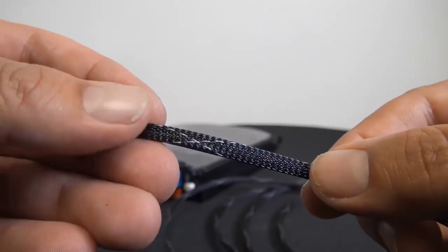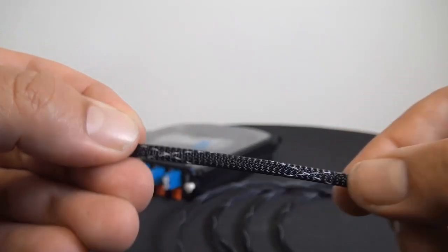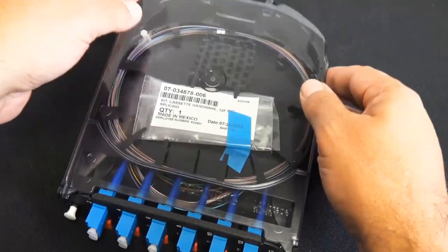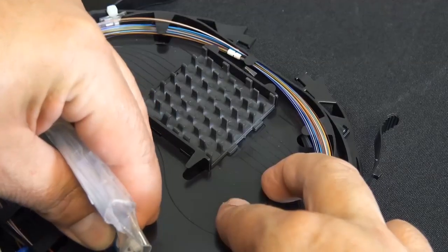Now there's a quick look at the protective braid tubing for incoming cable. And when you install that over the loose tube, it really looks sharp for your installation with this cassette.